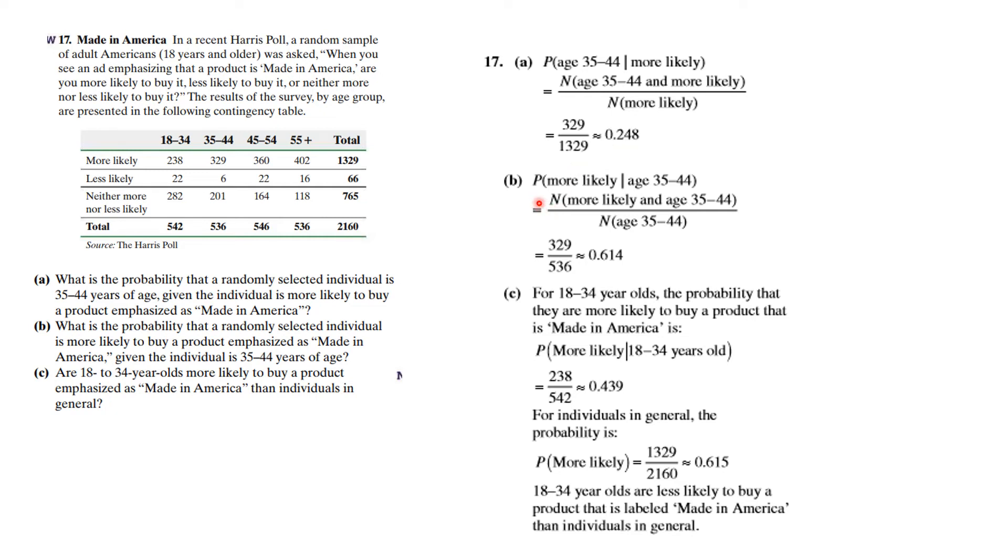For number B, the probability more likely given you're in that age group is the intersection divided by the number here. Now notice that the probability of E given F is not the same thing as the probability of F given E. They're different things because you can see the numbers are different.